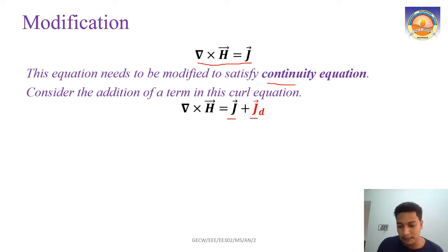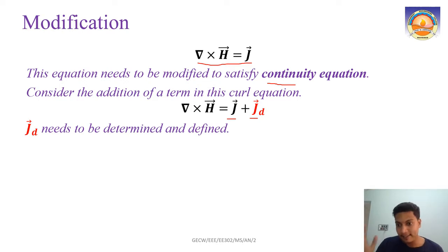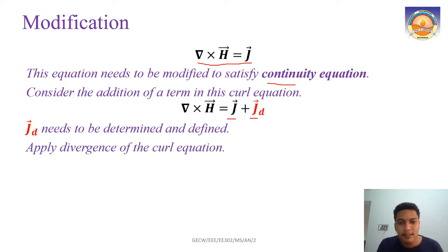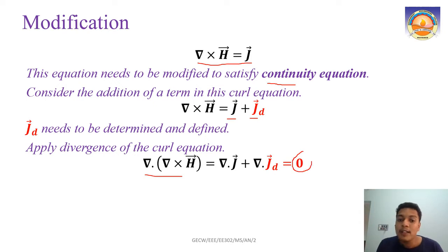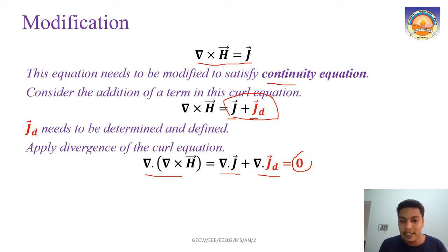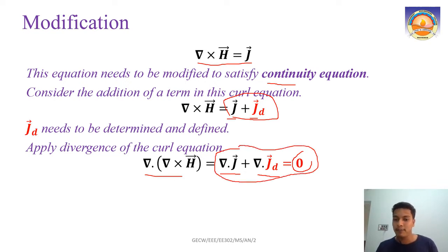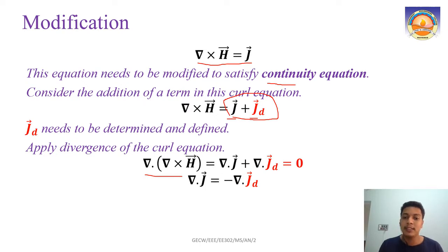Jd is a term Maxwell added purely mathematically. We need to determine what Jd is. When we apply the divergence to the modified curl equation, del dot (del cross H) is still zero on the left. On the right-hand side we now have two terms: del dot J plus del dot Jd equals zero. So del dot J is not directly zero, but del dot J plus del dot Jd equals zero.